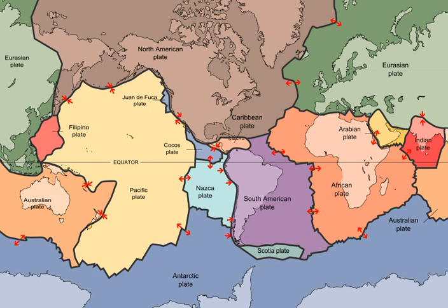Siliceous limestones belonging to the Silurian overlay the Ordovician rocks. These limestones are in turn overlain by white quartzite, known as muth quartzite. Silurian rocks which contain typical Silurian fauna are also found in the Vihi district of Kashmir.